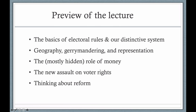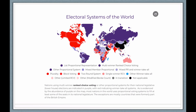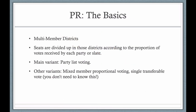The American electoral system is distinctive. This is a global map of electoral systems, and what you'll notice right away is that there's not a lot of red. Red is plurality voting of the sort that we have in the United States, which simply means that the candidate who gets the most votes in a contest wins, usually a two-candidate contest. The US is distinctive, and most countries have some form of proportional representation.